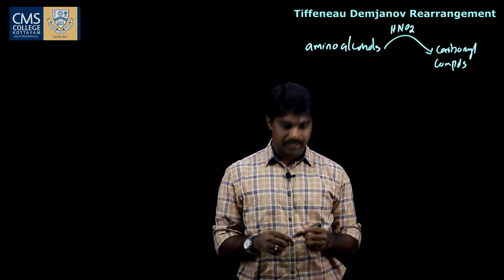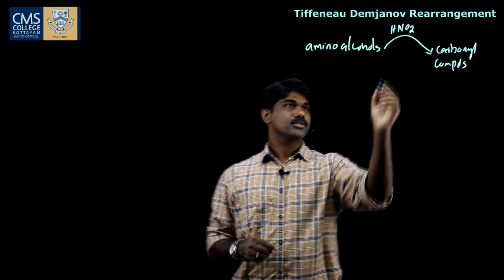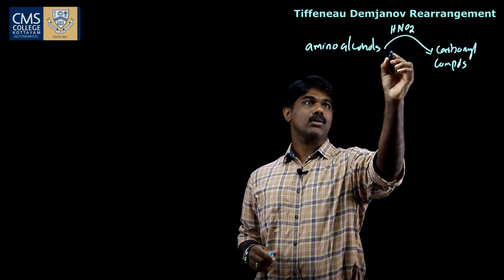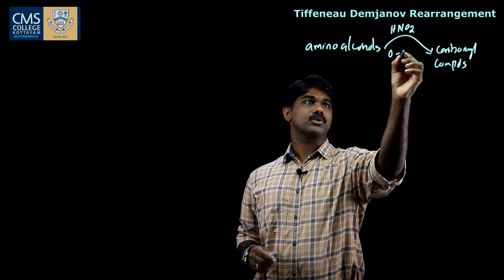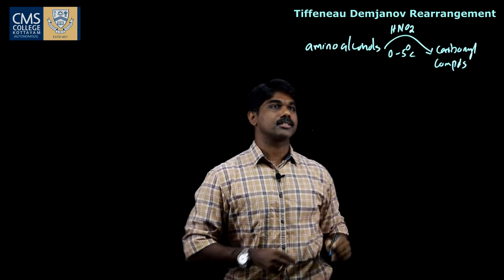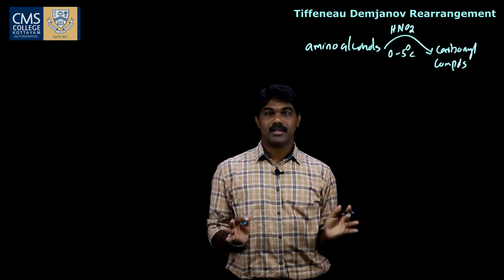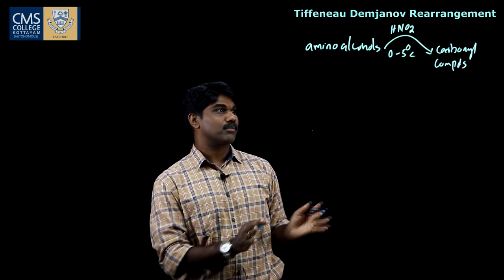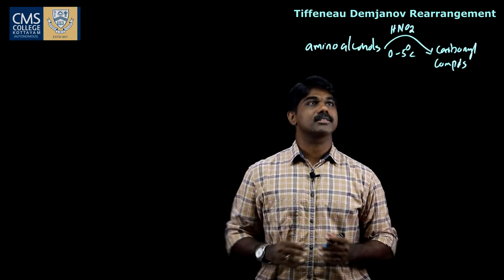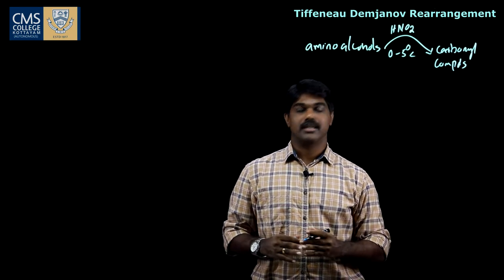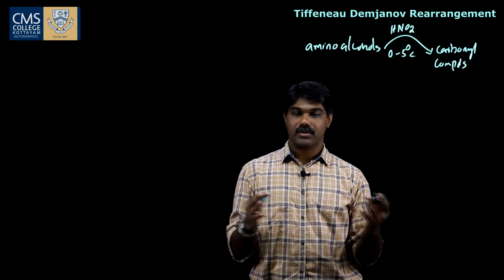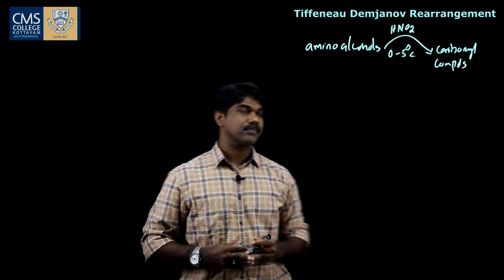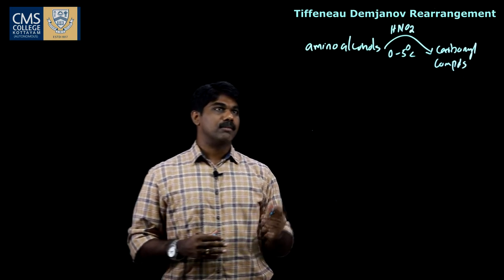The reaction can also be carried out using NaNO2 and HCl. It is performed at a low temperature of 0 to 5 degrees Celsius. So, amino alcohols get rearranged to carbonyl compounds in the presence of nitrous acid or NaNO2 and HCl.